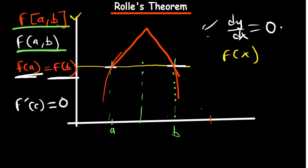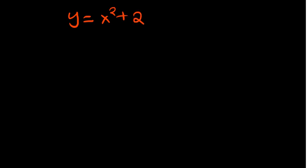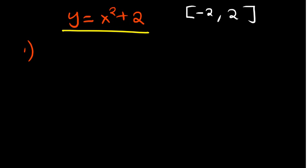Let's look at one example to see if Rolle's Theorem applies: y = x² + 2 on the interval [-2, 2]. The first condition: we need to make sure it's continuous on [-2, 2]. Since this is a polynomial function, we don't expect anything to make this function undefined at any given value of x, so it is obviously going to be continuous on [-2, 2]. The first condition is met.